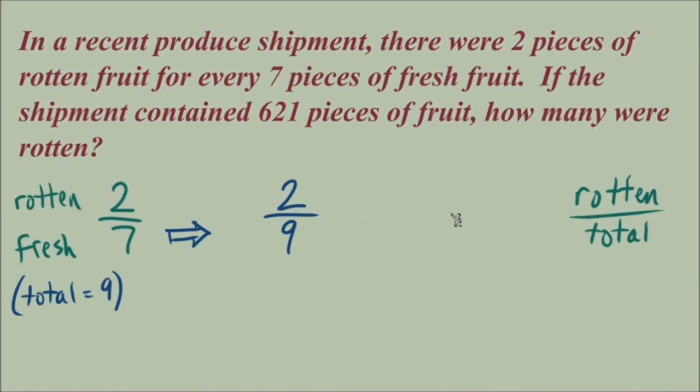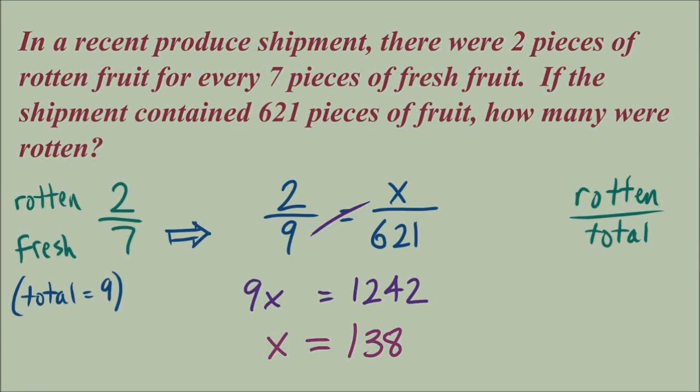And now we'll write our other fraction, which is x rotten fruit, an unknown how many rotten fruit, out of this larger group 621 total pieces. We'll multiply diagonally one way, get 9x. Multiplying diagonally the other way, 2 times 621 equals 1,242.